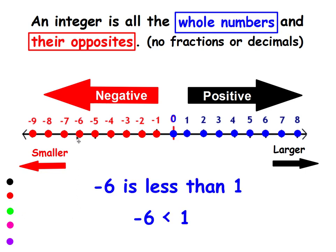If I have negative 6 is less than 1, that's true because negative 6 is further to the left. I would write that using this symbol: negative 6 is less than 1.